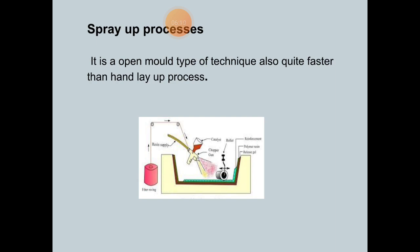However, it uses a handgun that sprays resin and chopped fiber on the mold simultaneously. A roller is used to fuse these fibers into a matrix material. This figure shows in this process the operator controls thickness and consistency, therefore the process is more operator dependent.